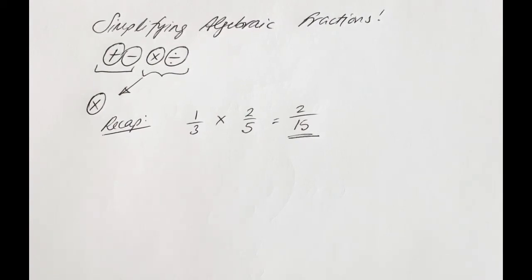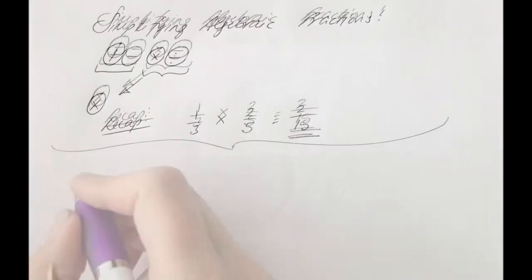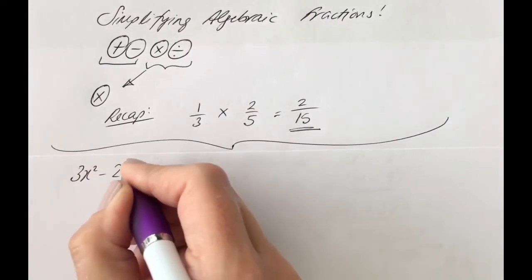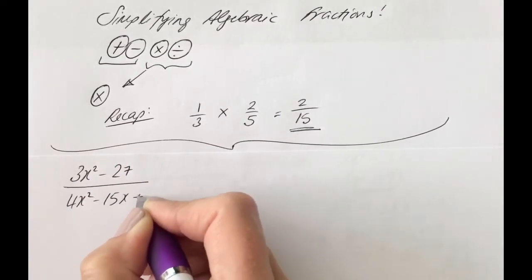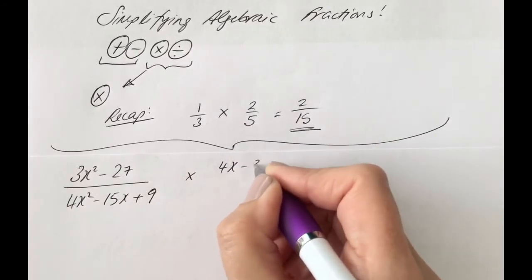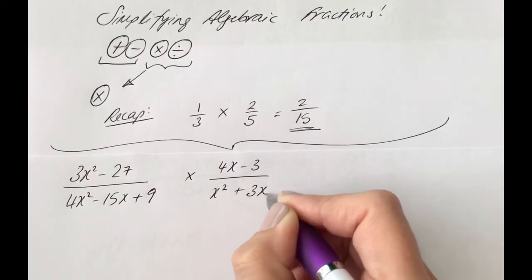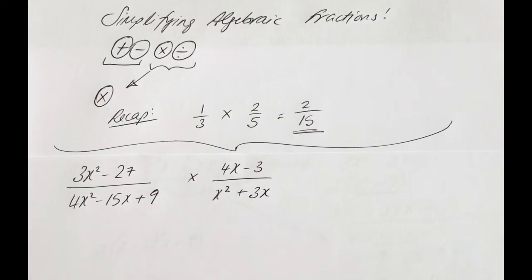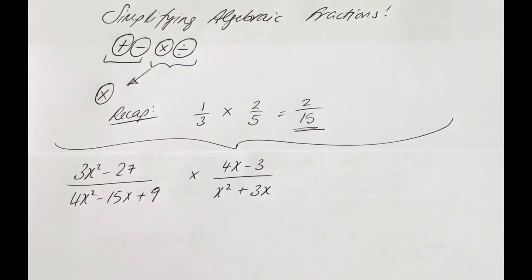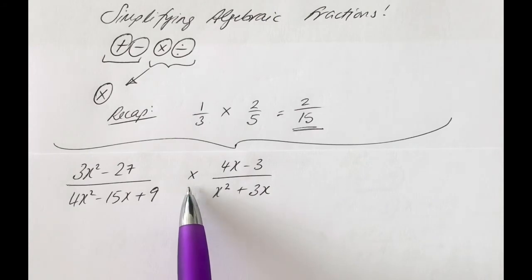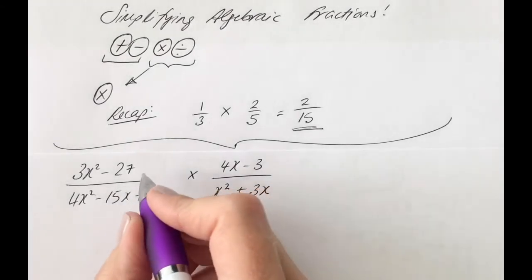Now we're going to do that with algebraic fractions. Like before, we're still going to follow the process of: factorize, look to cancel, then do the operation, and then look to factorize and cancel again. Let's try the following example: 3x squared minus 27, over 4x squared minus 15x plus 9, multiplied by 4x minus 3 over x squared plus 3x. This looks very complicated, but we always factorize first, then cancel, before doing the multiplication.